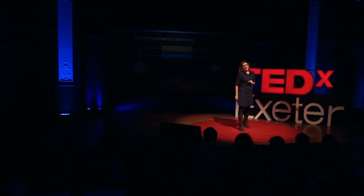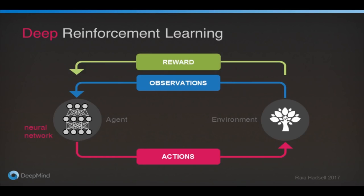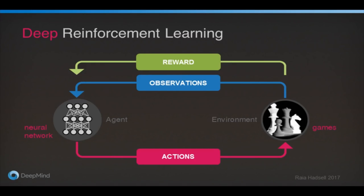The agent is a mathematical model, and at DeepMind we've been very successful in using deep neural networks — with many layers of neurons and millions of connections between those neurons — as the agent. This merges the fields of deep learning and reinforcement learning. As for the environment, we mainly use games at DeepMind.